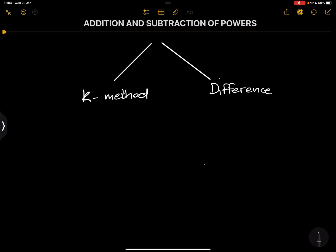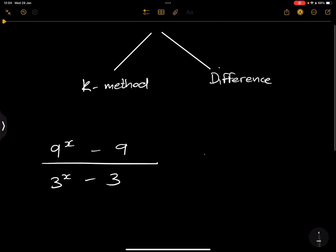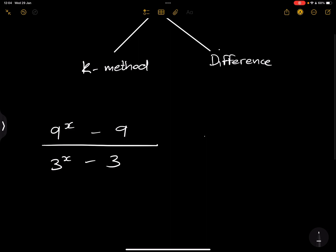So for instance, if we've got a question, let's say we've got 9^x minus 9 divided by 3^x minus 3. Now we are still going to apply the very same thing, adding and subtraction of powers or exponents in this case. Now we've got a minus sign in between. I want us to be very careful on this one.